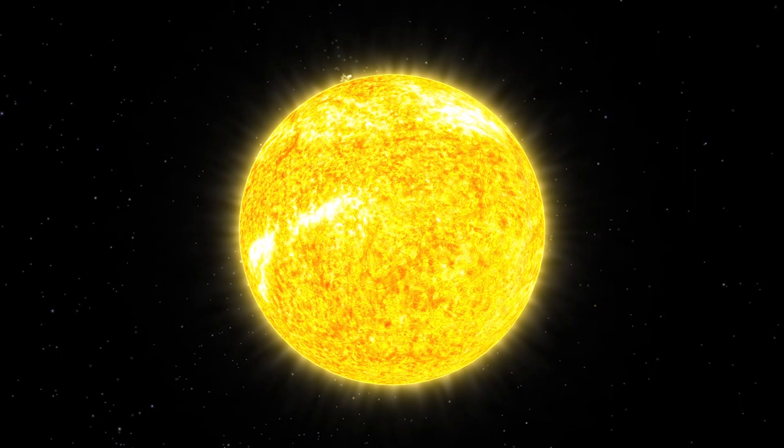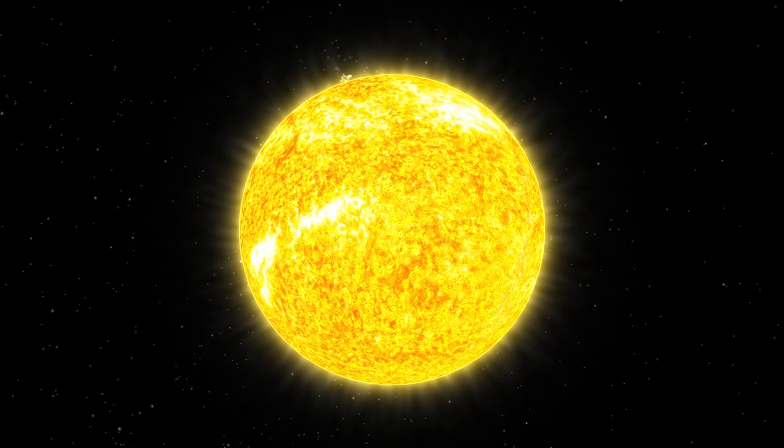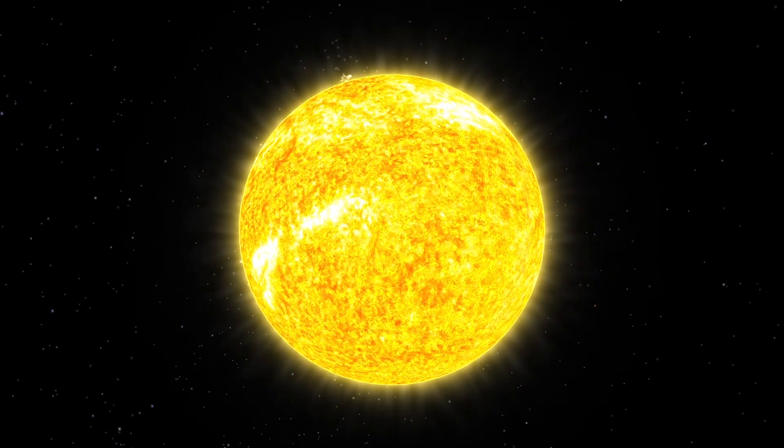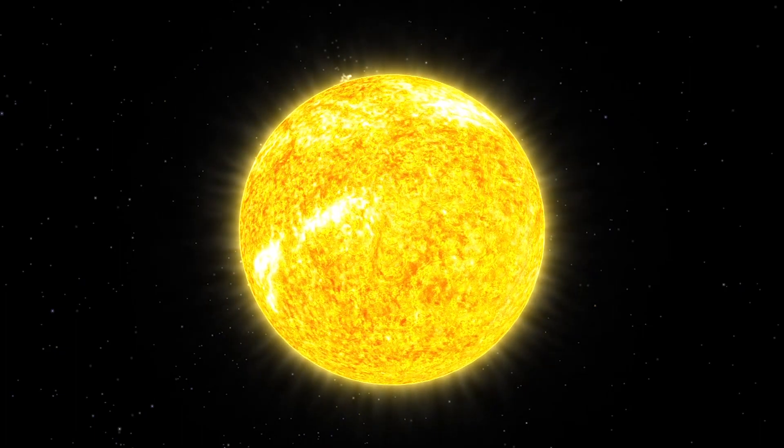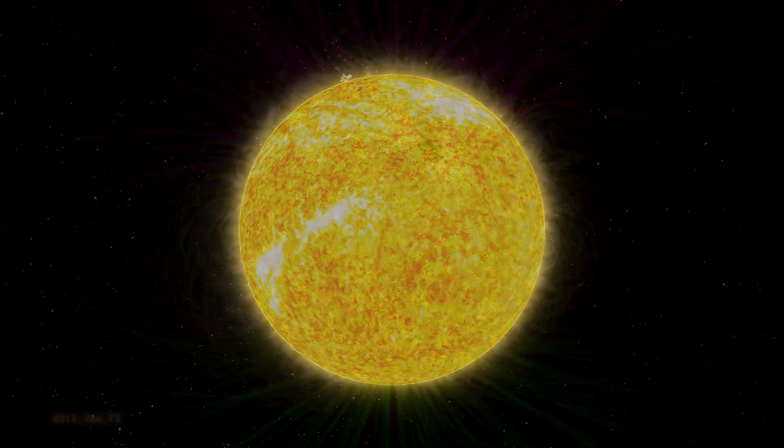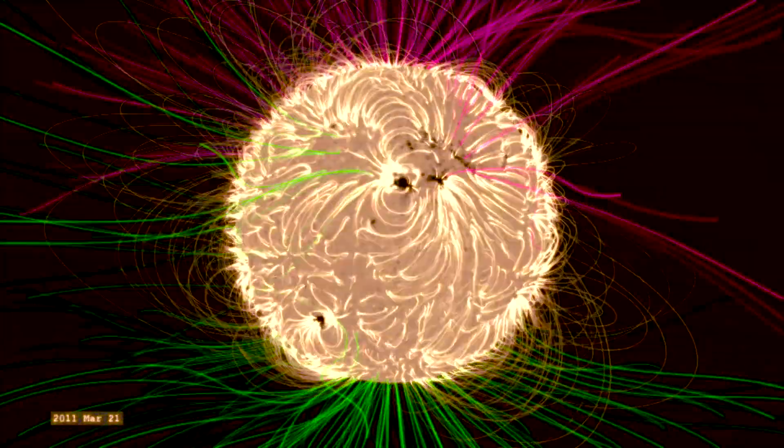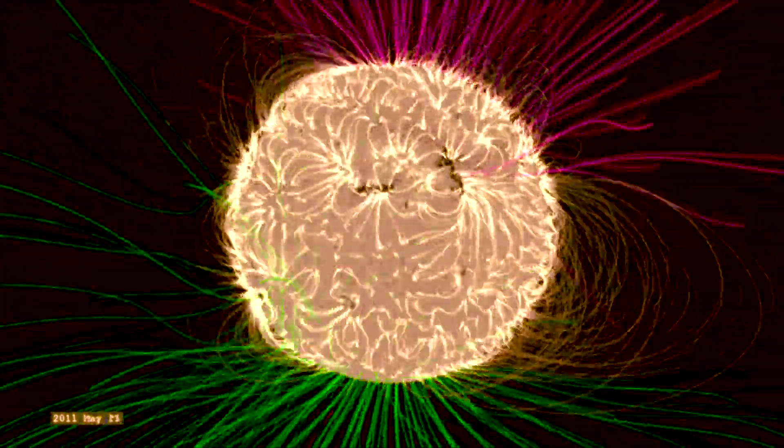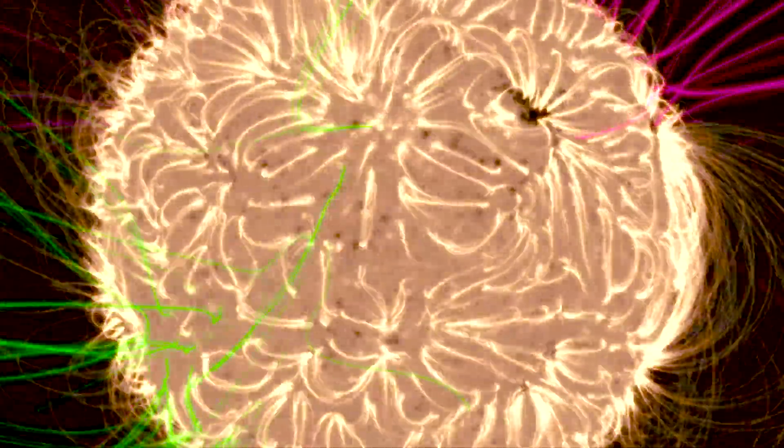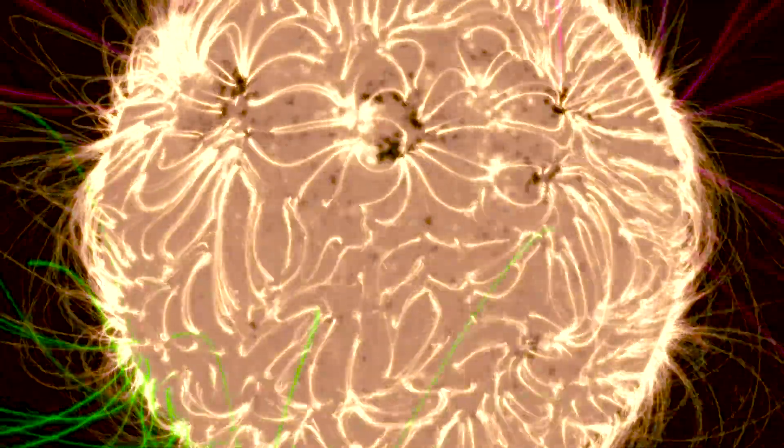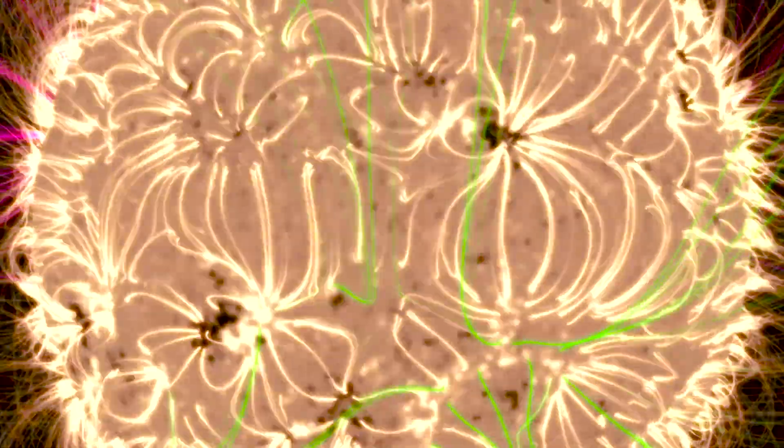Why certain regions on the Sun's surface are cooler than the others is not well understood, but one theory is that the strong magnetic fields in these regions inhibit convection below the surface. Convection is the transfer of heat from a hot location to a cold one.